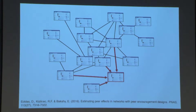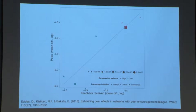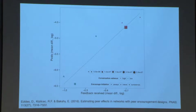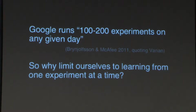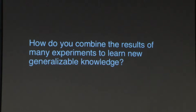We designed a larger set of experiments with multiple conditions to identify the effect of this mechanism. Each dot is a single experimental condition: on the x-axis is the average feedback users receive (likes and comments), and on the y-axis is how much they post. This is essentially a grouped instrumental variables plot. Google and other major internet companies run 100 to 200 experiments on any given day, so why limit ourselves to learning from a single experiment at a time?